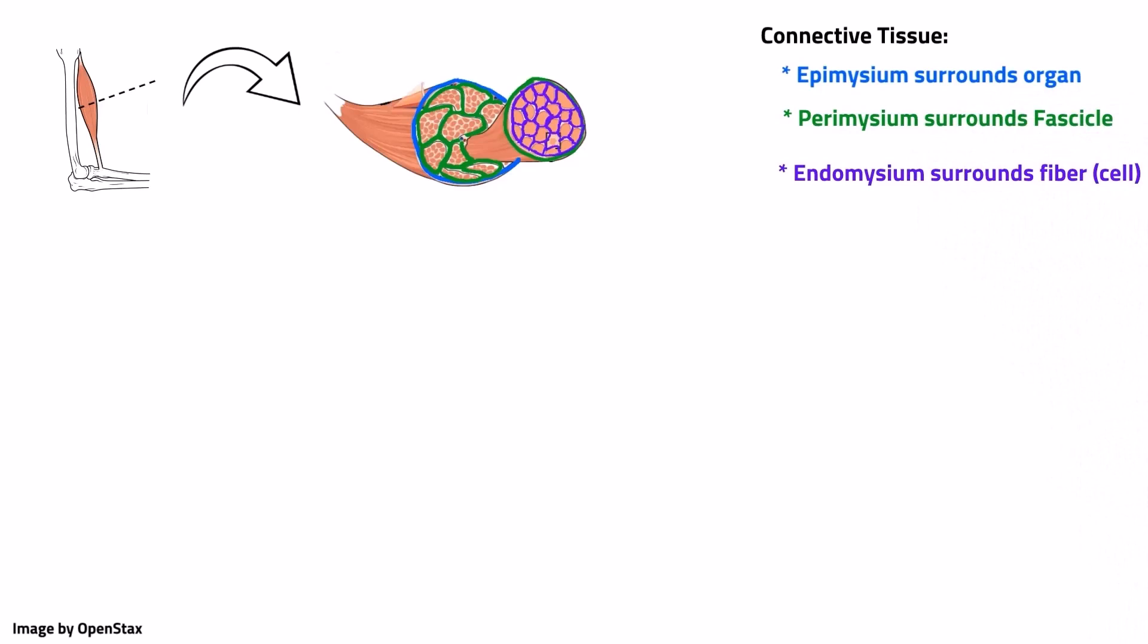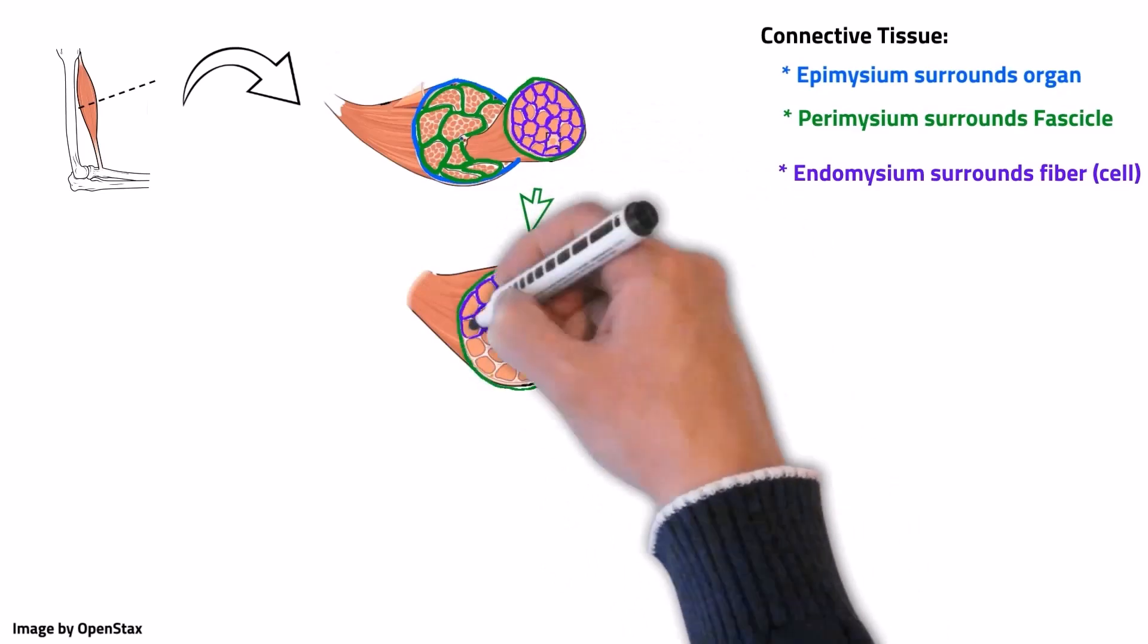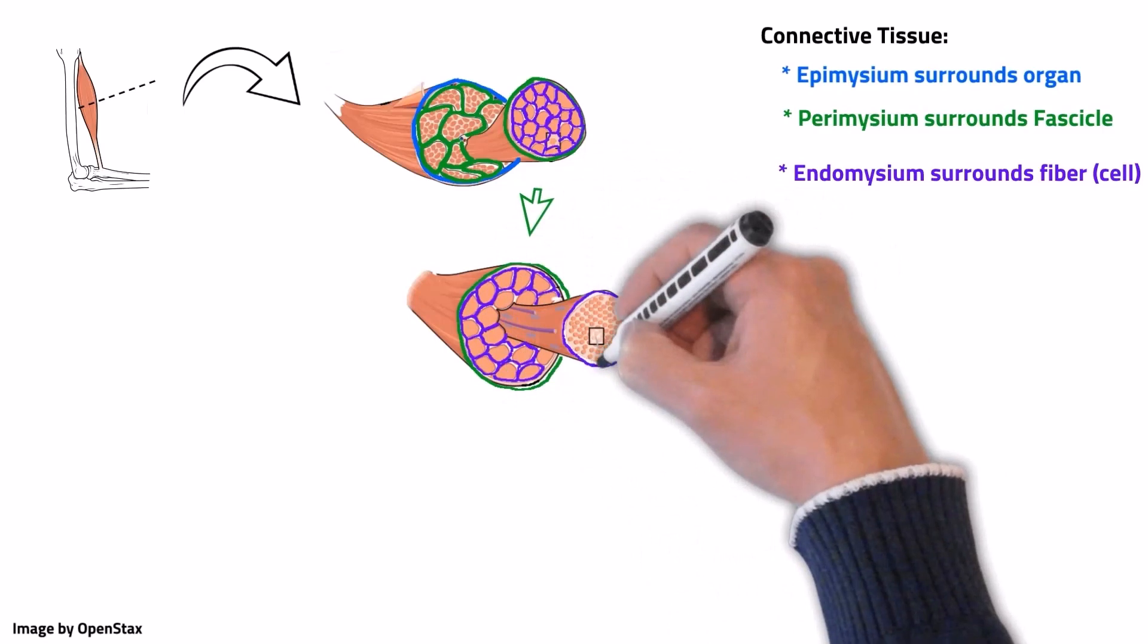We need to dig a little deeper to find the proteins that convert energy from ATP into force and motion. We'll redraw an individual muscle fascicle surrounded by the perimysium, then the individual muscle fibers separated by the endomysium. Then we can pull an individual fiber out of the fascicle and zoom in further.